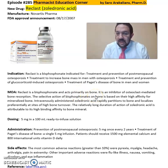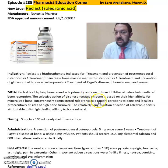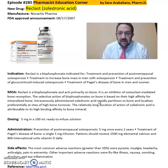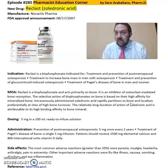As mentioned, it's a bisphosphonate and acts primarily on the bones. It is an inhibitor of osteoclast-mediated bone resorption. The selective action of bisphosphonates on bones is based on their high affinity for mineralized bones. Intravenously administered zoledronic acid rapidly partitions into bones and localizes preferentially at sites of higher bone turnover.